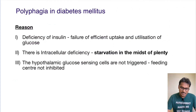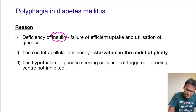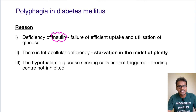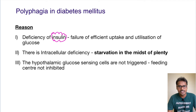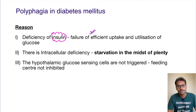What happens in diabetes mellitus? In diabetes mellitus there is deficiency of insulin. Insulin is an anabolic hormone which causes glucose to enter inside the cells. Now when insulin is deficient, there is failure of efficient uptake as well as utilization of glucose.